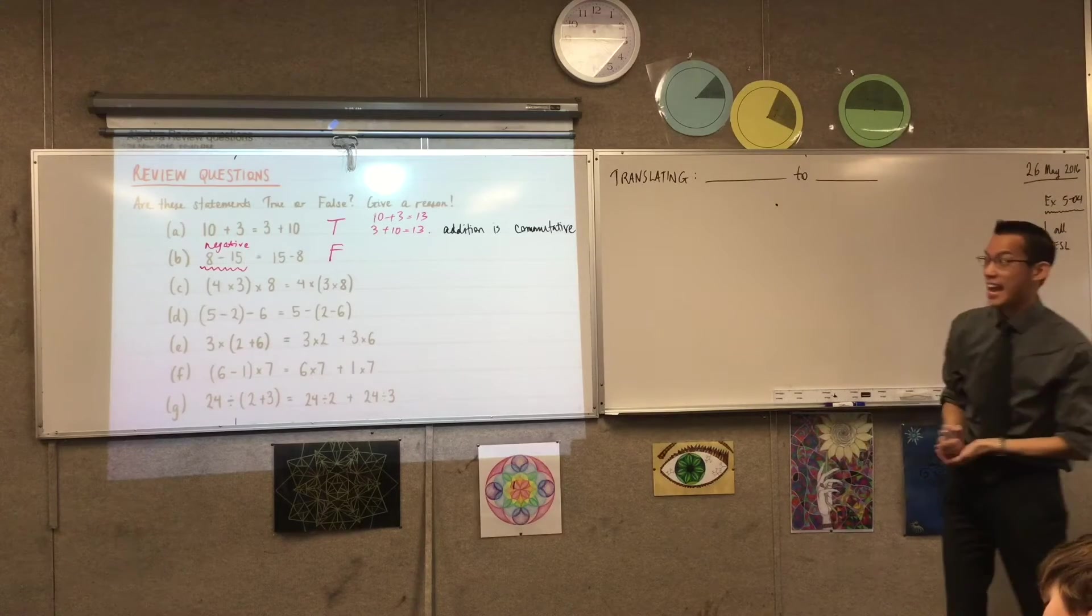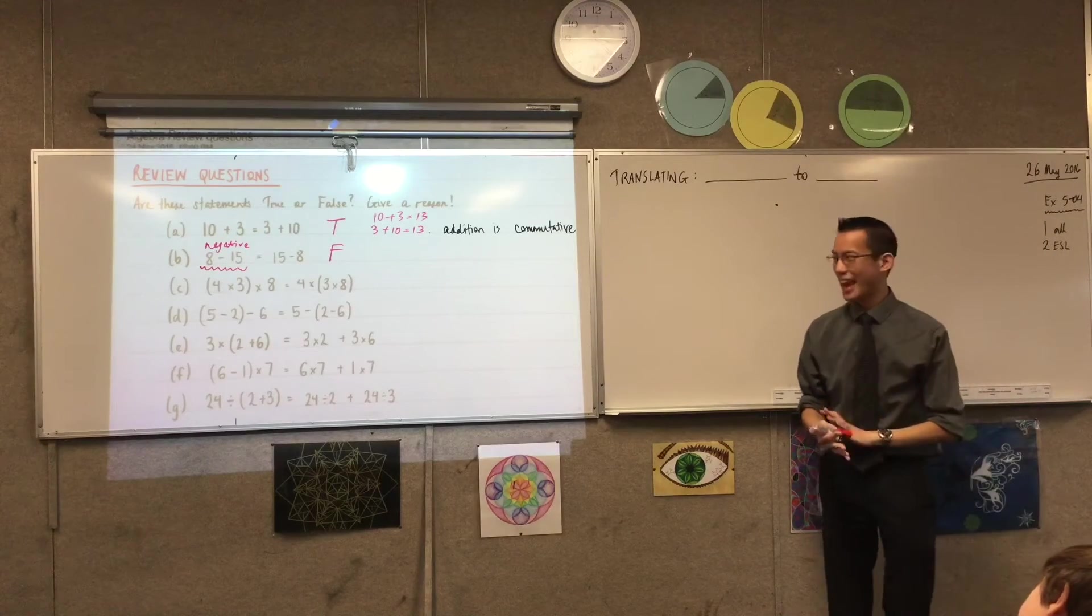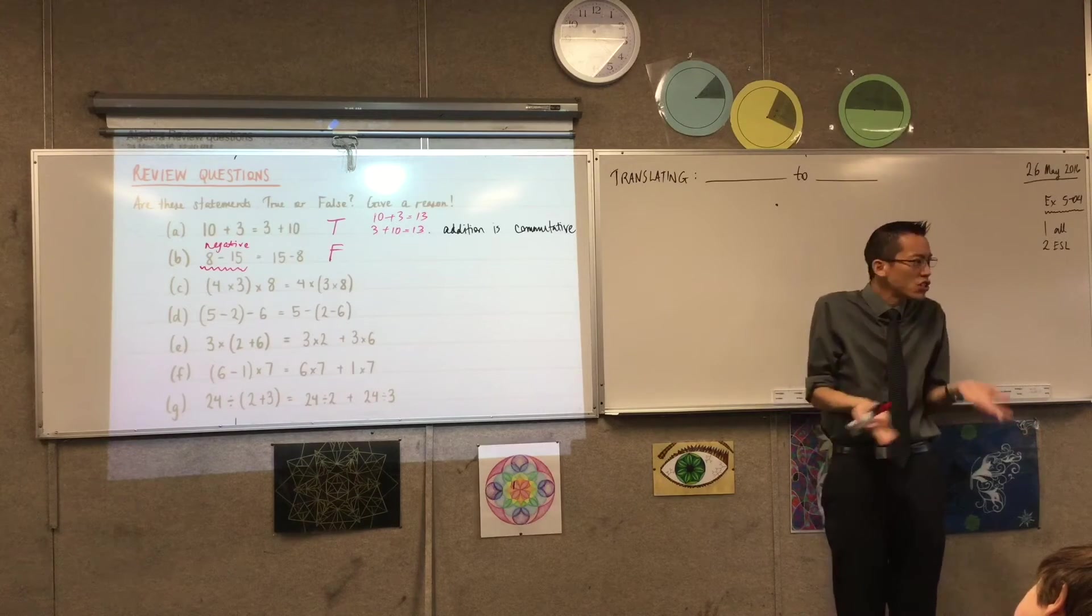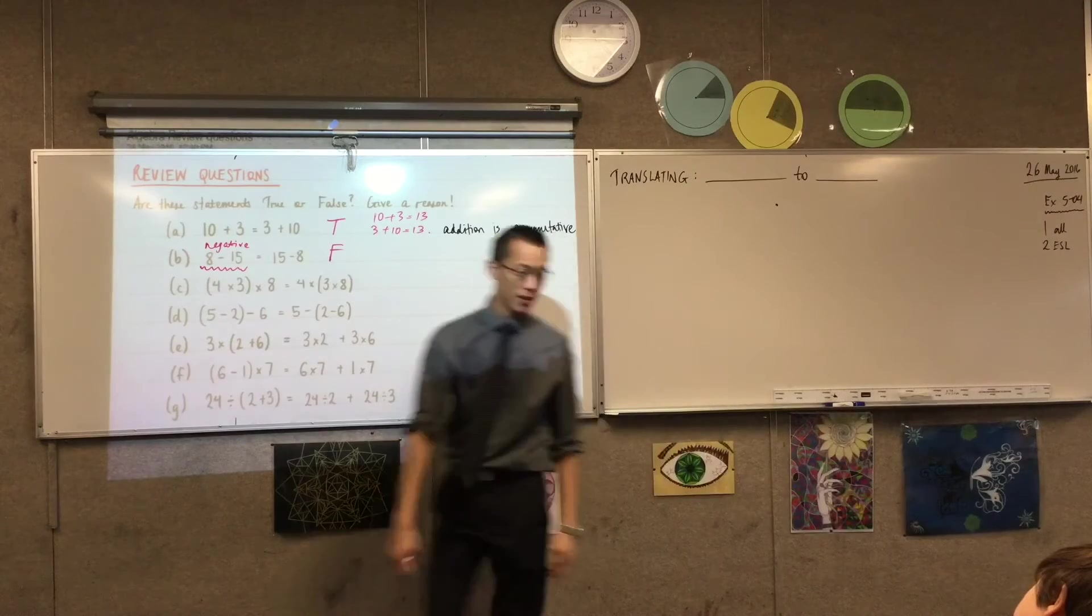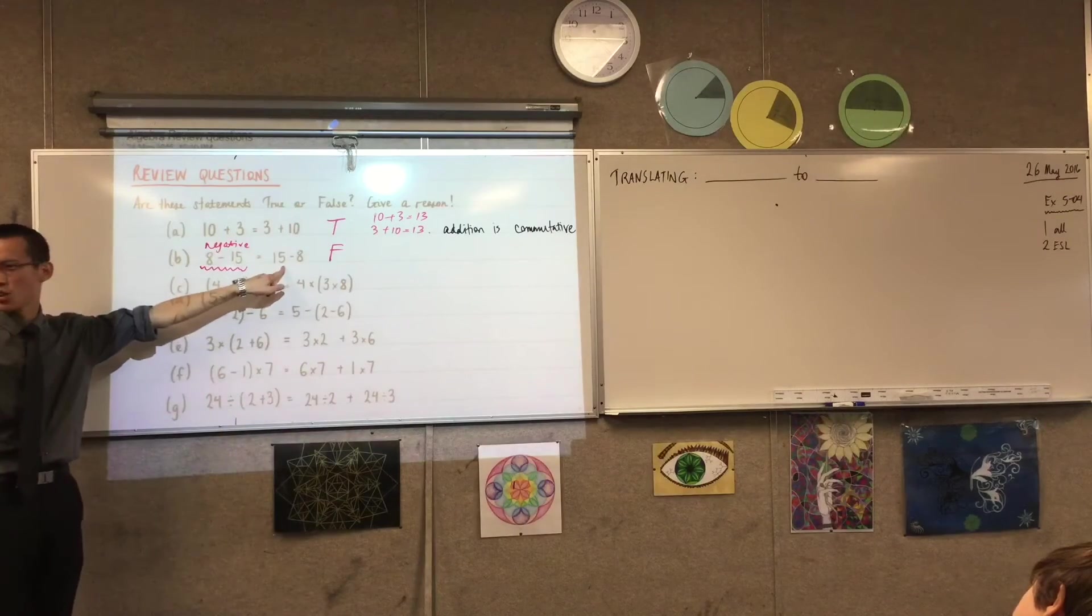So, we actually can. It sounds a bit weird. But we actually can subtract 15 from 8. We just get a negative number. We get a number less than 0. However, it's not the same number you get over here, do you? What do you get?